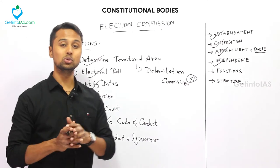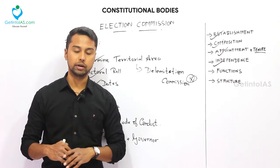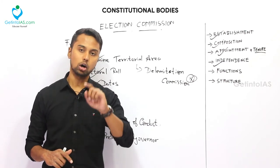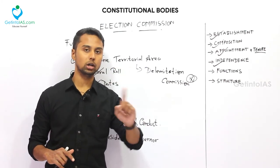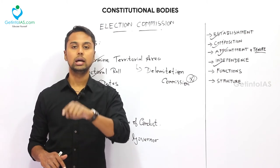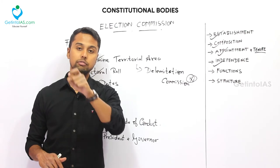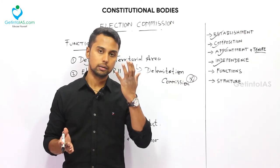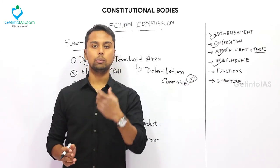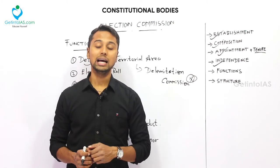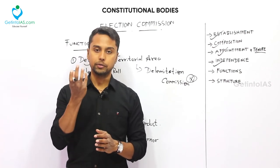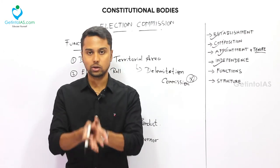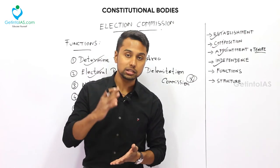The last important function is to advise the President and the Governor. To remove a Member of Parliament, the President consults the Chief Election Commissioner. Regarding the Governor, to remove an MLA, the Governor consults the State Election Commissioner. Additionally, when President's Rule is implemented, the Election Commission advises the President on whether elections can take place or not. In these ways, the Election Commission acts as an advising body for the President and the Governor.